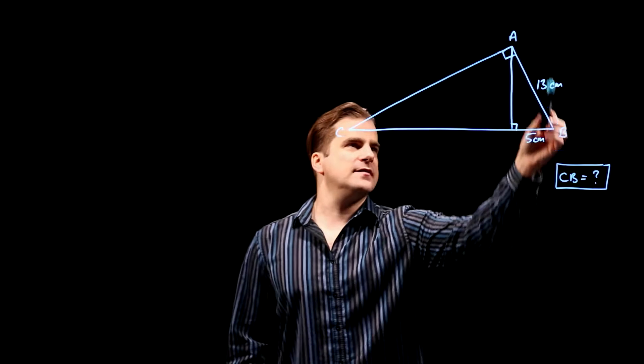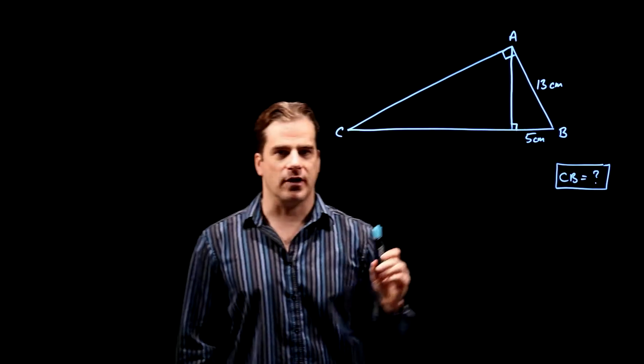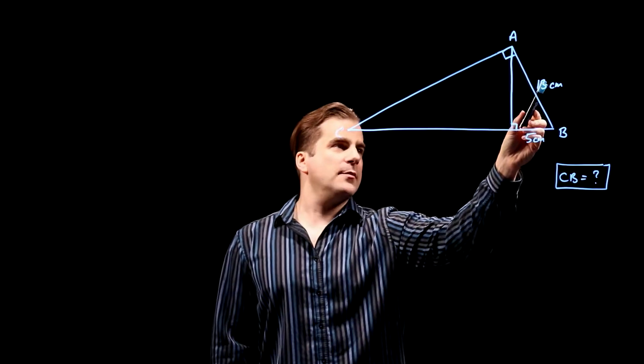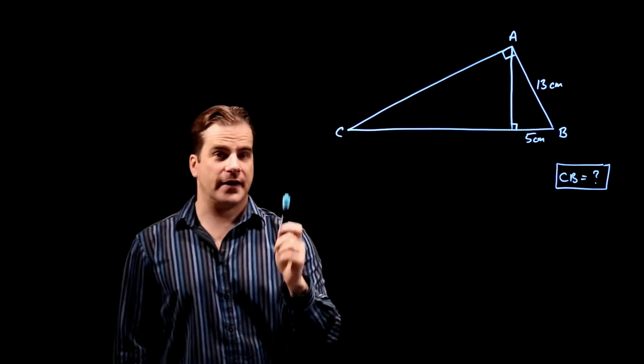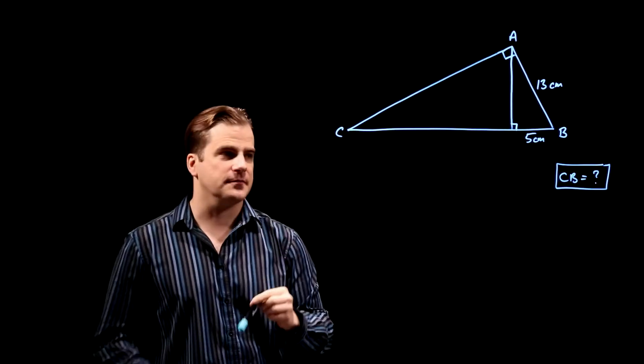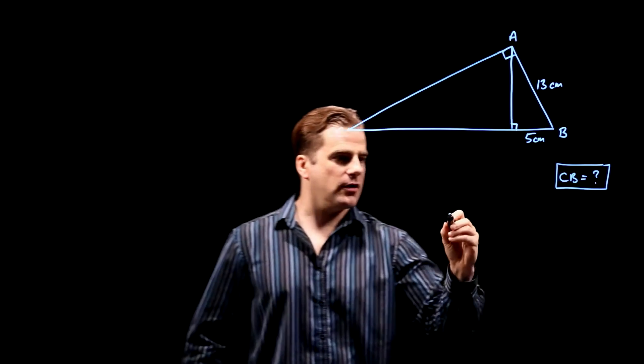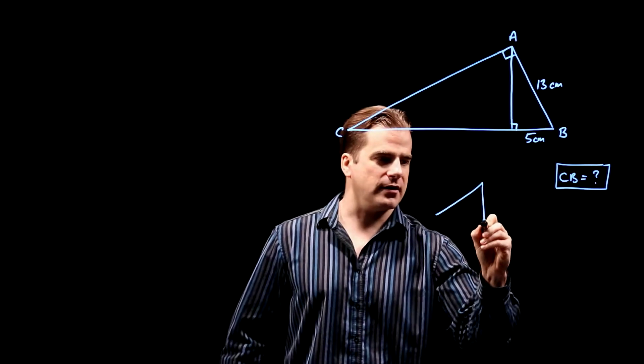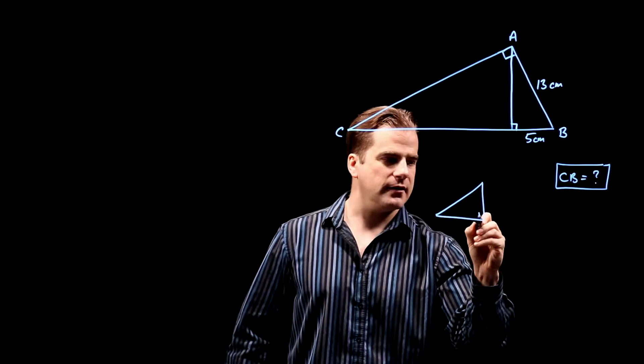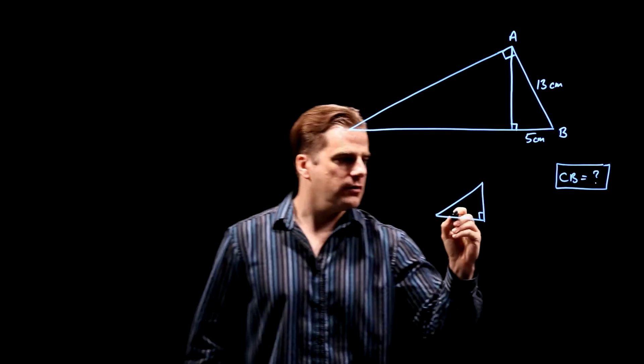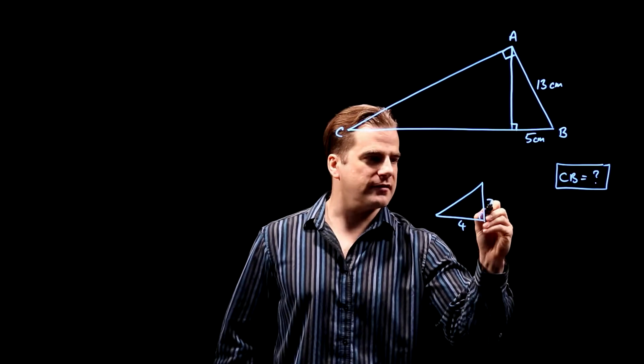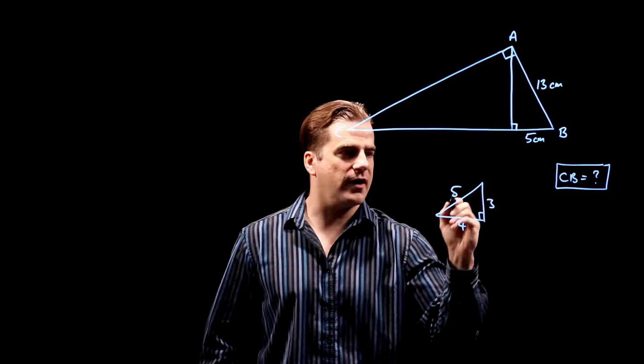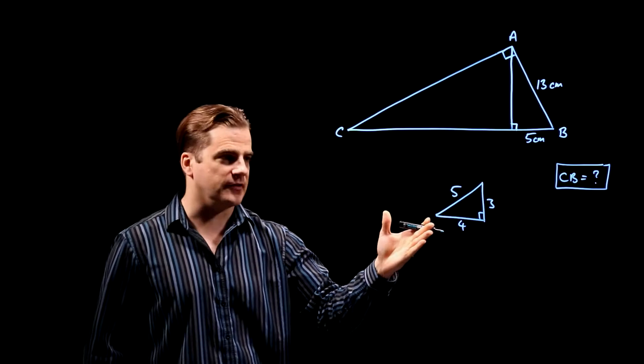Well, let's look at this smaller right angle triangle. The hypotenuse is 13 and this is five, and that should ring a bell because you may have heard of three, four, five triangles. That's a right angle triangle when this side is four and that is three. The hypotenuse is always five because of Pythagoras theorem.